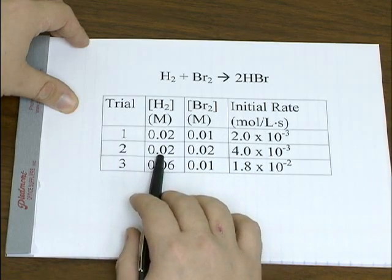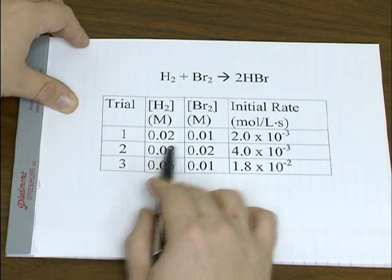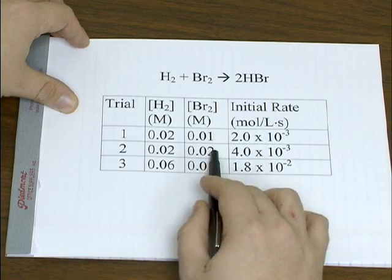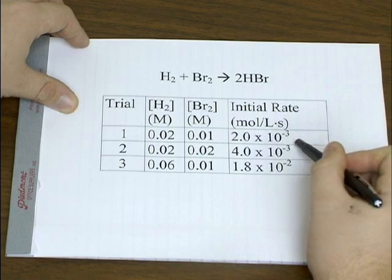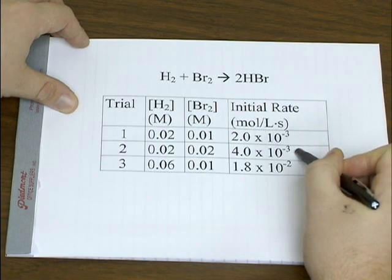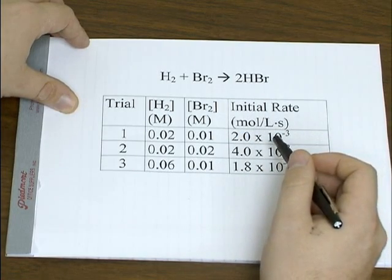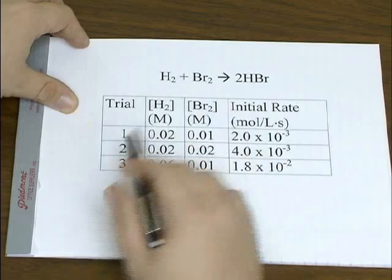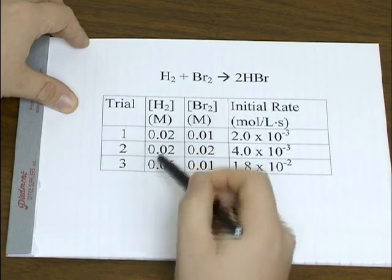You do the reaction one more time but you hold hydrogen's concentration constant and you change the concentration of bromine. That way any effect on the rate is only going to come from the one chemical you changed. And you do it a third time and you do the opposite. We hold bromine's concentration constant and we'll change the concentration of hydrogen.